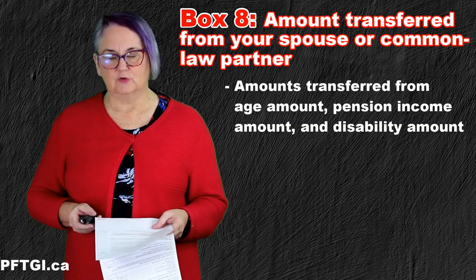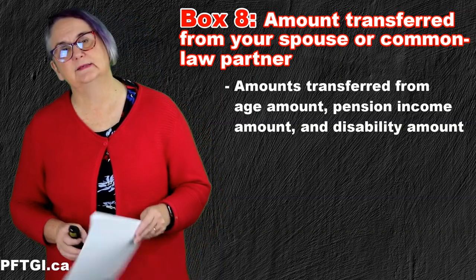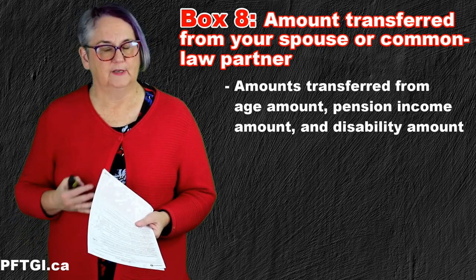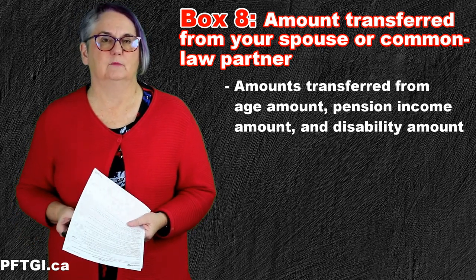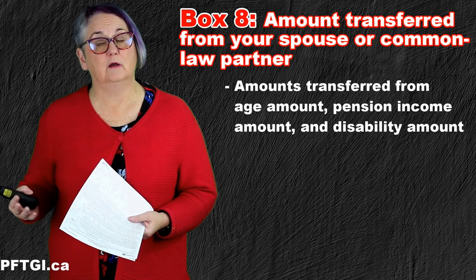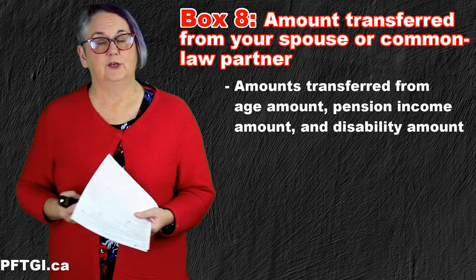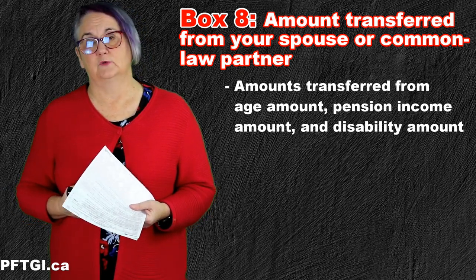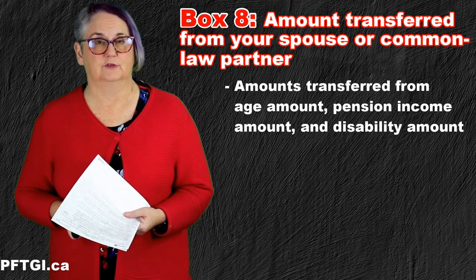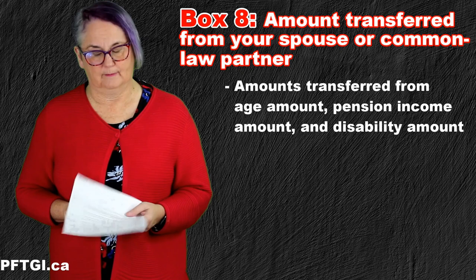Box 8 is the amount transferred from your spouse. If your spouse has the disability tax credit and no income, they can transfer that to you. If your spouse is over 65 without income, they can transfer the age exemption to you. And if you have a spouse who's in school, they can transfer up to $5,000 of tuition to you if they don't need it to reduce their own income.